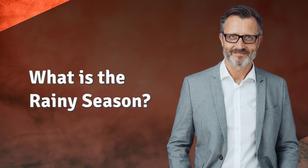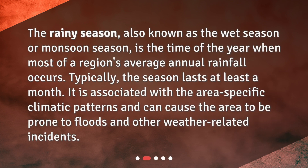What is the rainy season? The rainy season, also known as the wet season or monsoon season, is the time of the year when most of a region's average annual rainfall occurs. Typically, the season lasts at least a month. It is associated with area-specific climatic patterns and can cause the area to be prone to floods and other weather-related incidents.